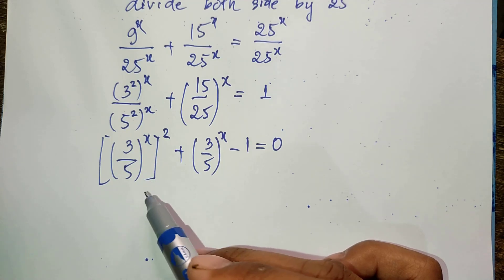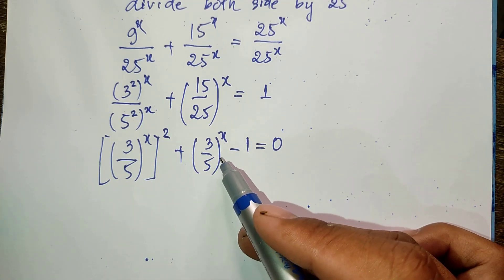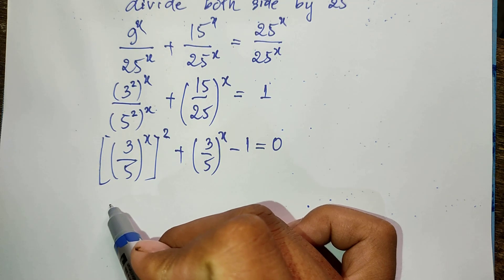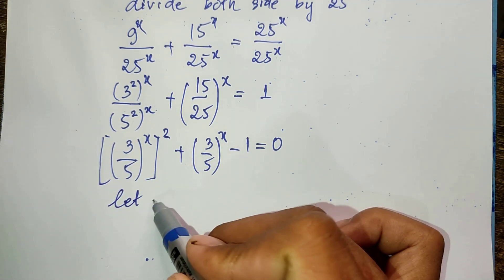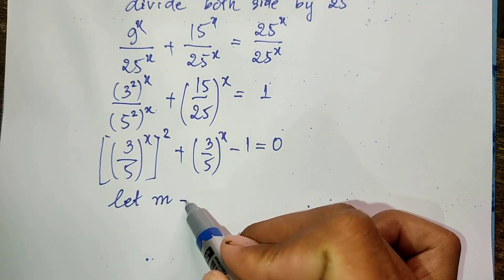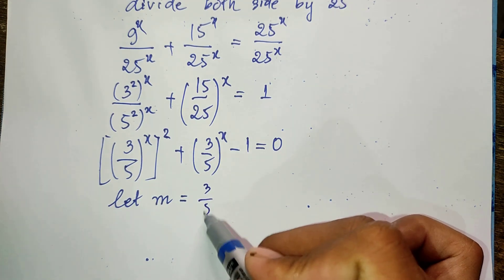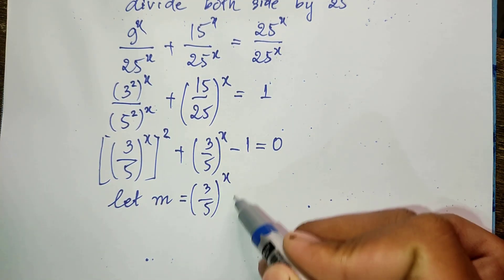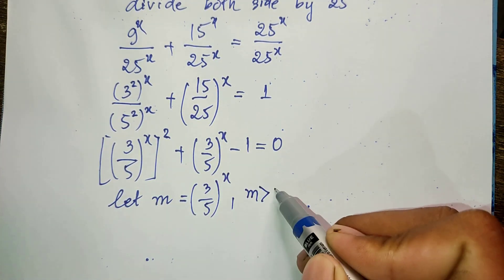Now we can let this be another variable. So I let m = (3/5)^x. We know that m must be positive.